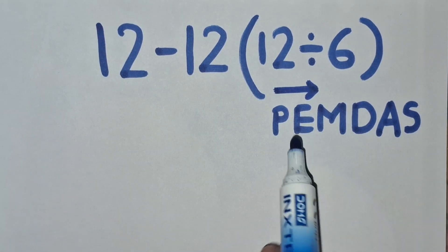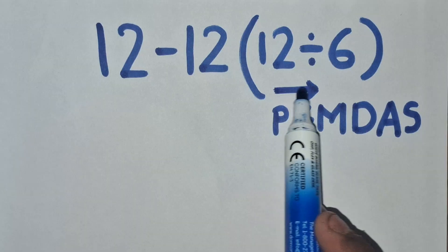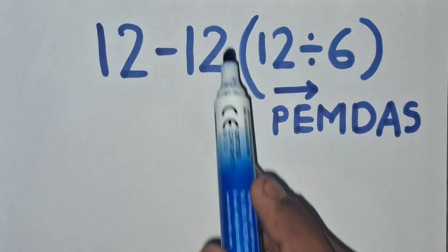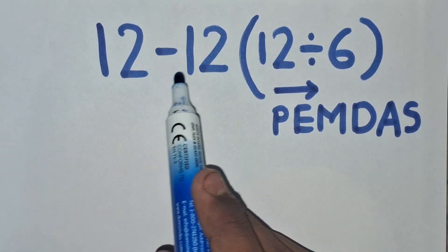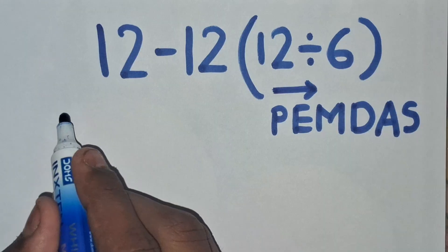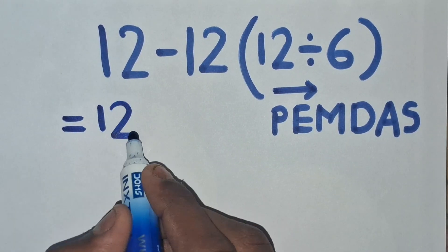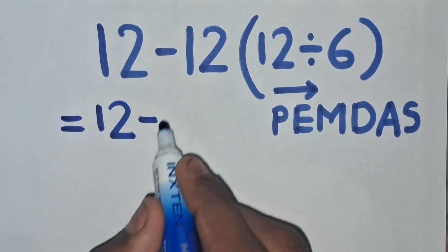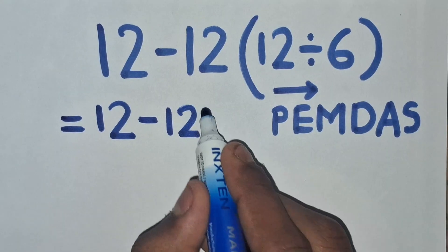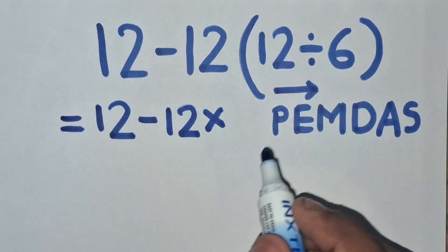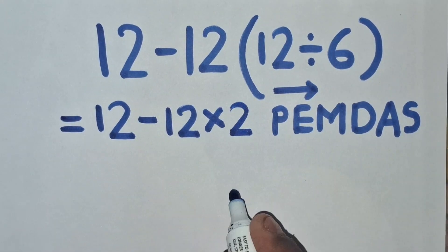According to this rule, first we have to solve these parentheses, then the multiplication, and finally the subtraction. So 12 minus 12 times 12 divided by 6: first, 12 divided by 6 equals 2, so the expression becomes 12 minus 12 times 2.